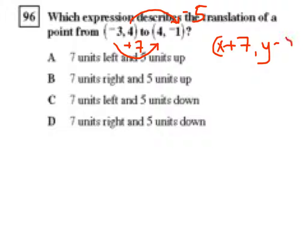So that would be y minus 5. So that would be the equivalent of 7 units to the right and 5 units down.